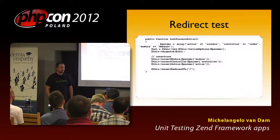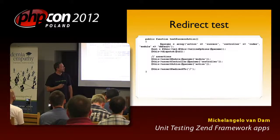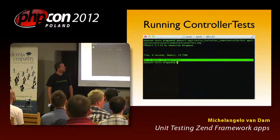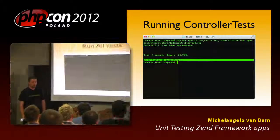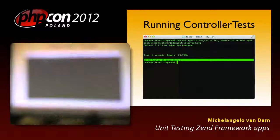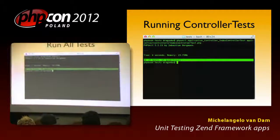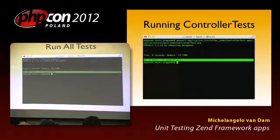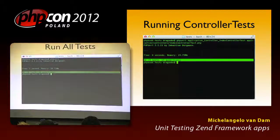You dispatch to the URL without parameters and should go back to the home page. When you run it, all is green. When you run all the tests, you got 42 assertions, but everything is green. Your job is done. You can go home and relax, because everything is working.